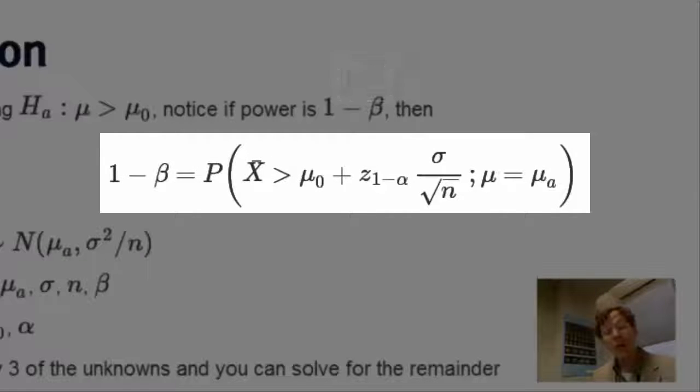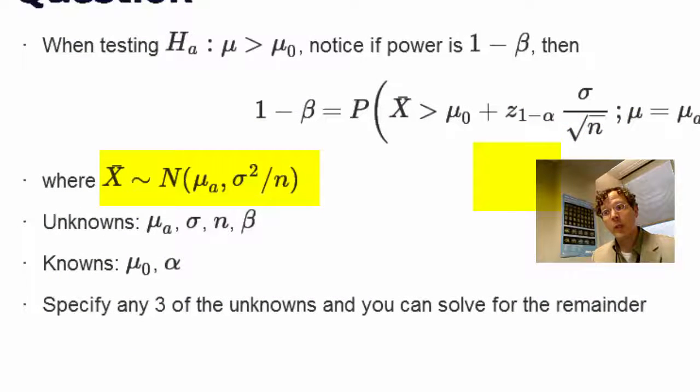Our power is equal to the probability that X bar is larger than mu naught plus the standard normal quantile times the standard error, where this probability is calculated under the hypothesis that mu equals mu_a. And then I simply reiterate that point here on the next line, where I'm explicitly stating that X bar is normal, with mean mu_a, and variance sigma squared over n.